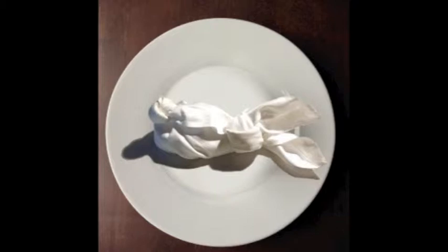This is how we make a sleeping bunny. Start by folding the napkin in half, meeting opposite corners so that it forms a triangle.